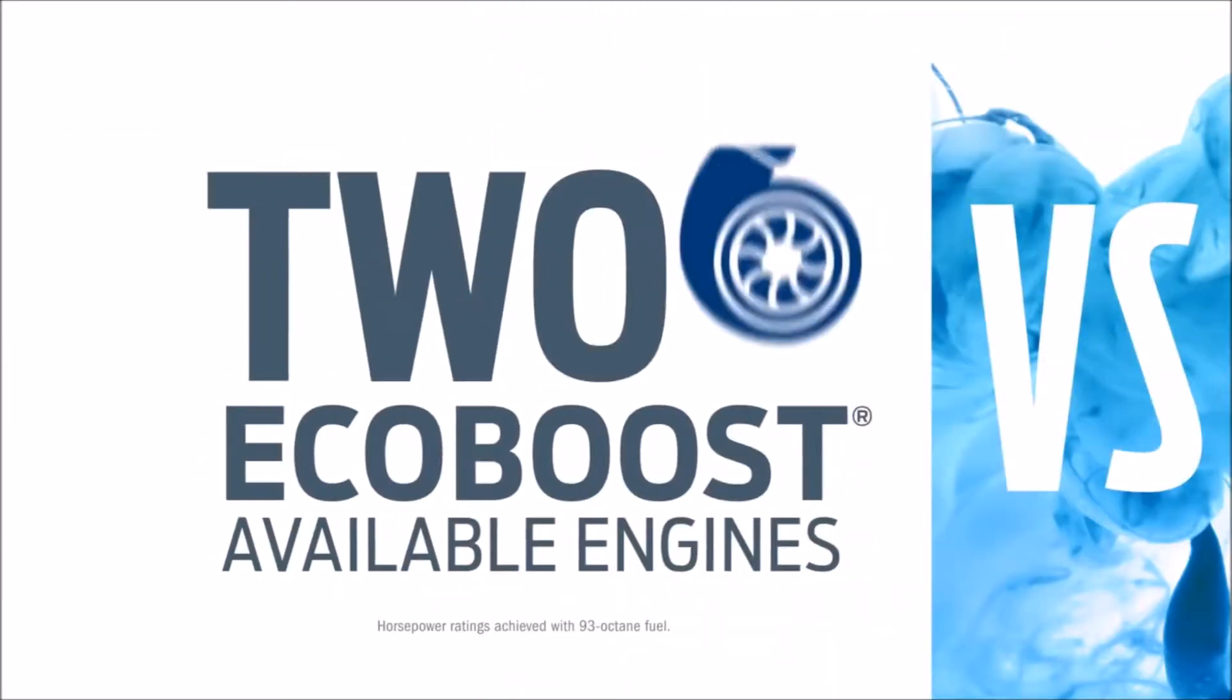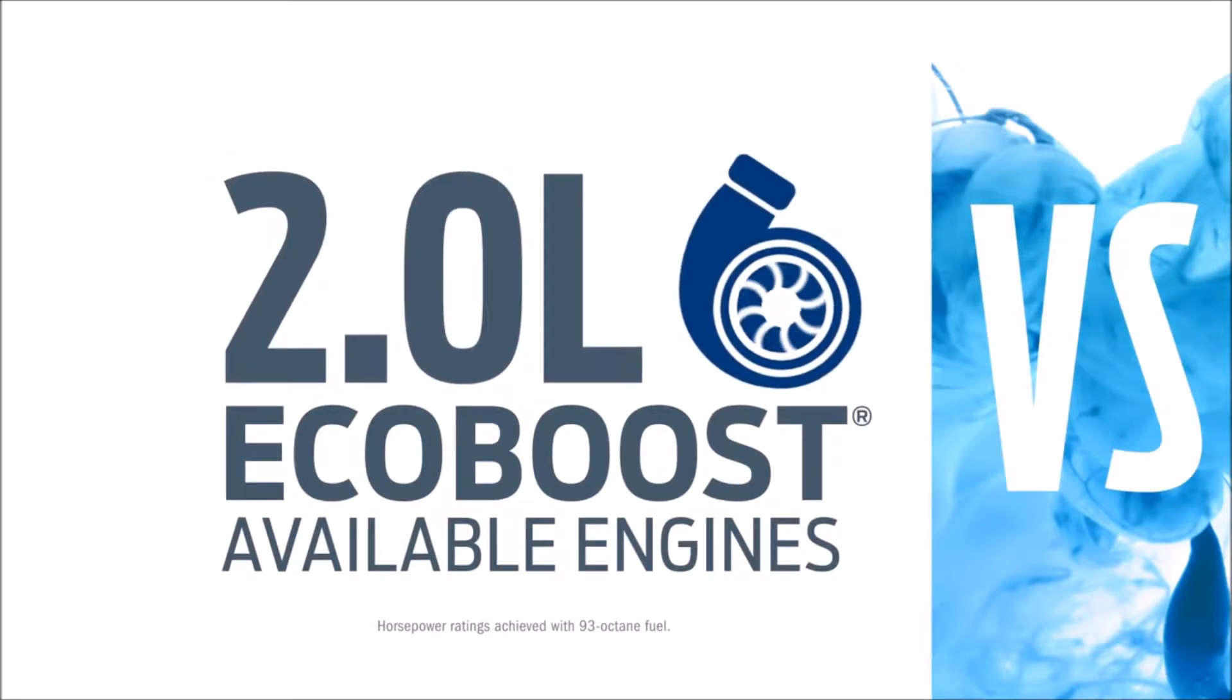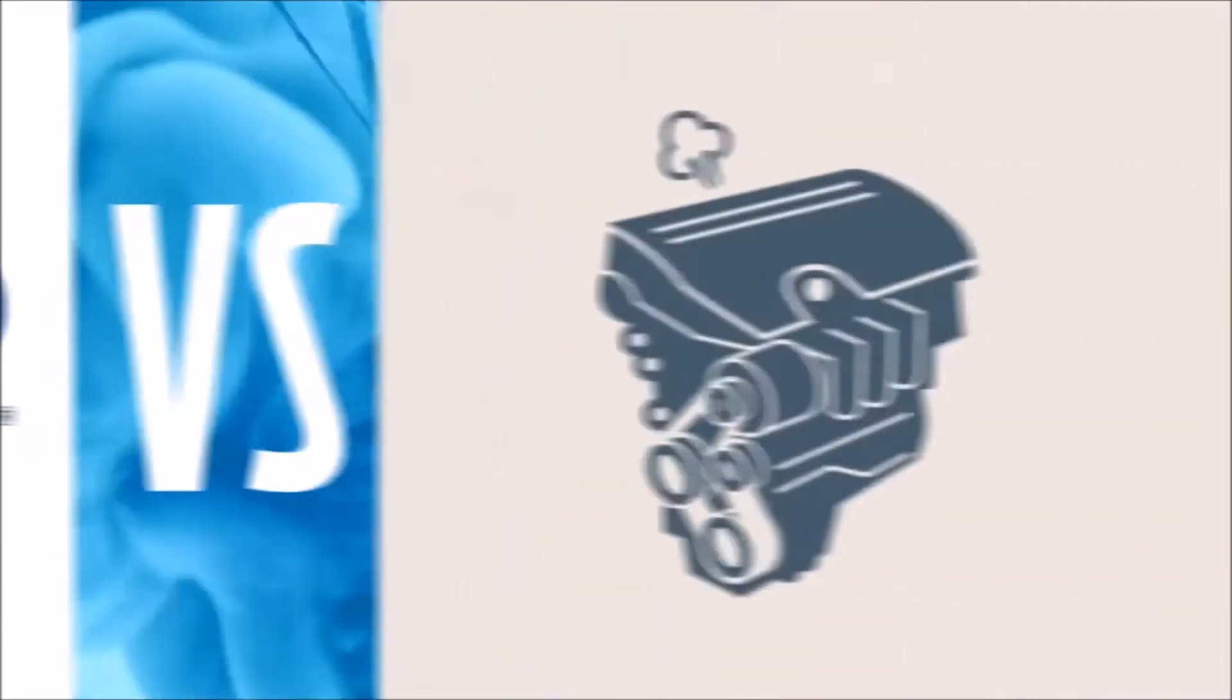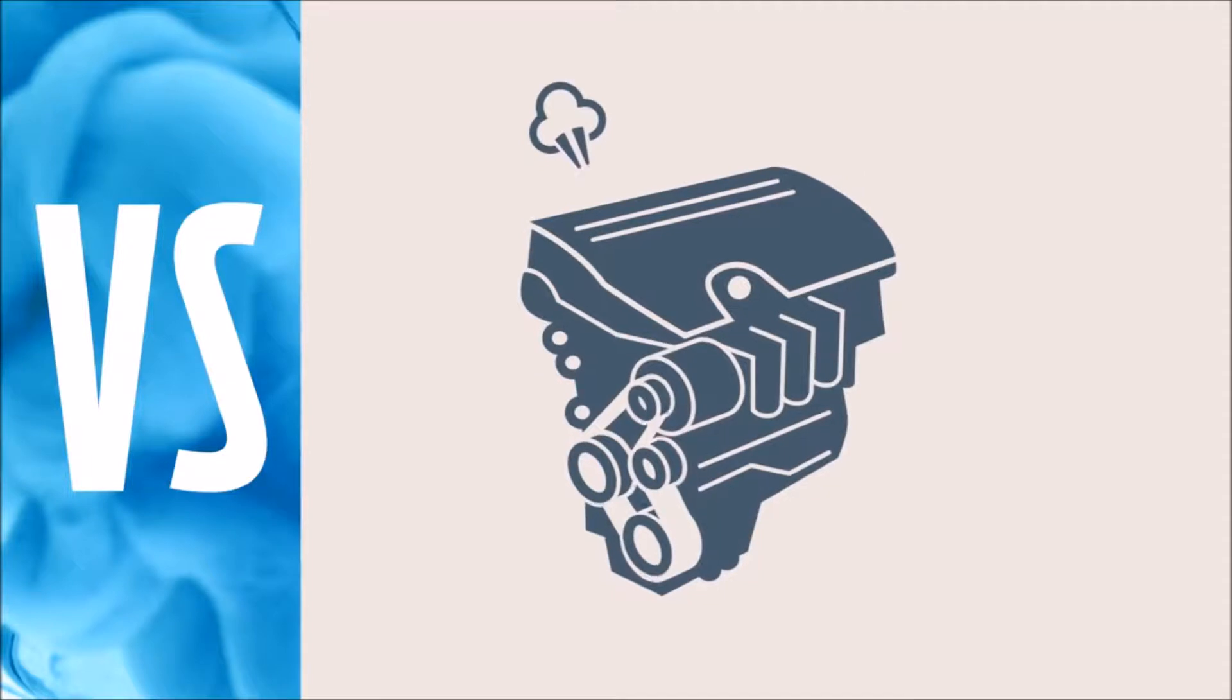Taurus has two available turbocharged EcoBoost engines, the 240 horsepower 2.0 liter and the 365 horsepower 3.5 liter. LaCrosse has an engine or two, just not turbocharged.